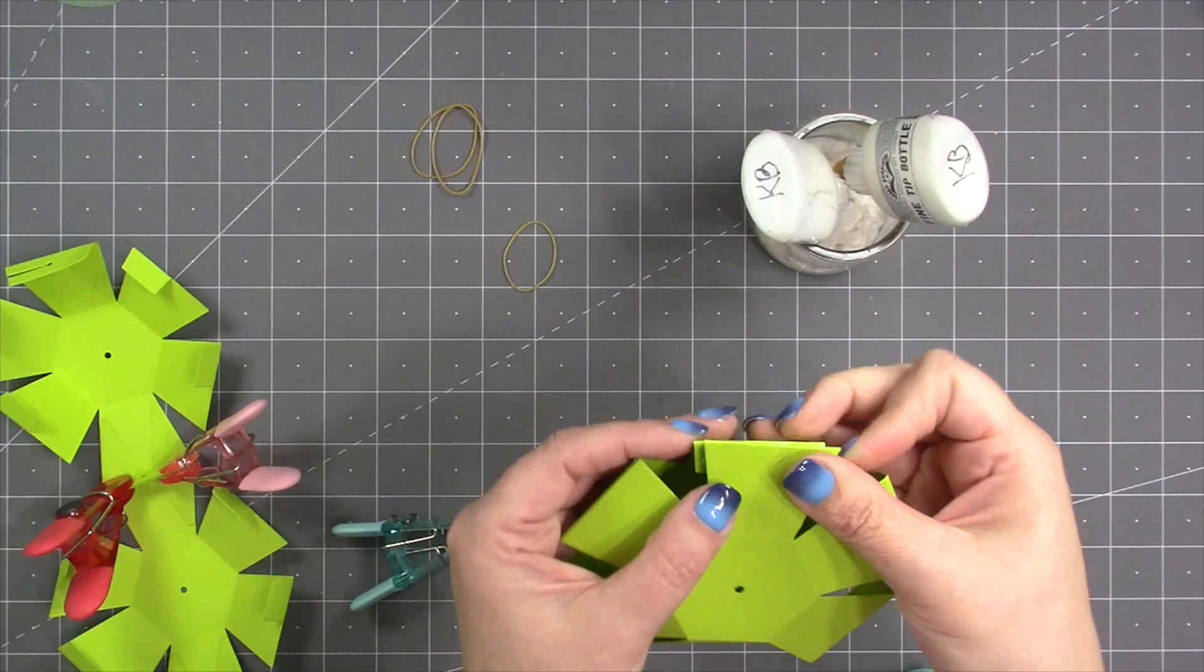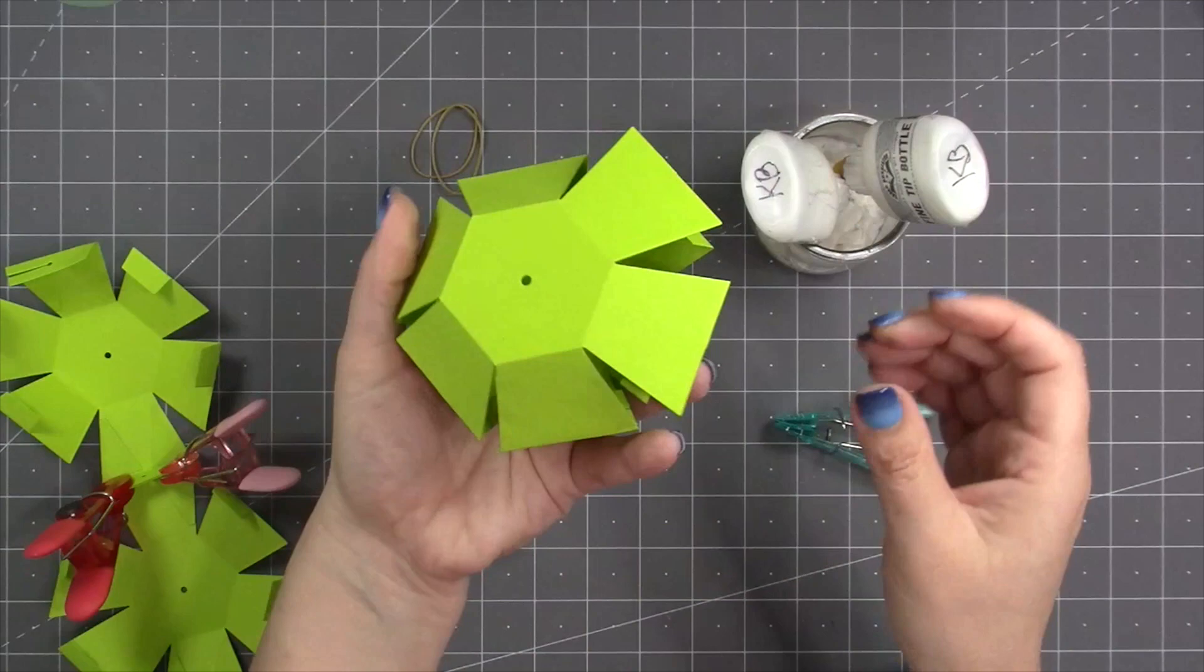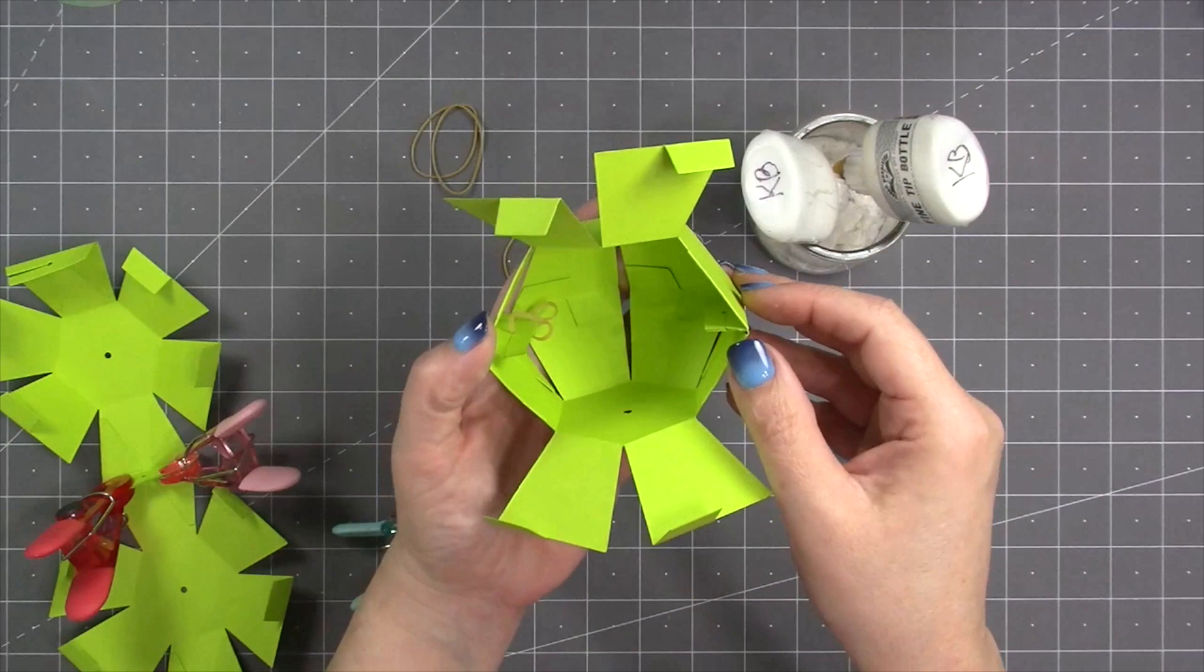Then that brings you around to the other kiss connection. Kiss connections mean that they attach tab to tab. You want to make sure that they're lined up nicely so that the holes in the slits line up.